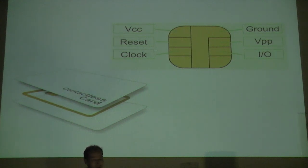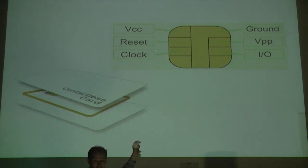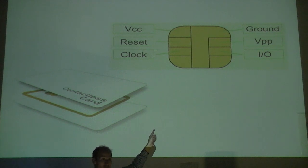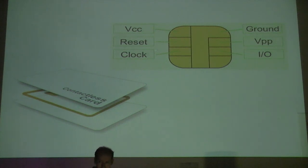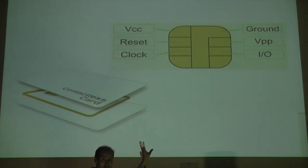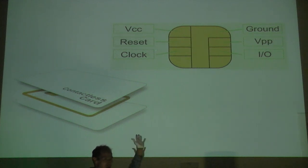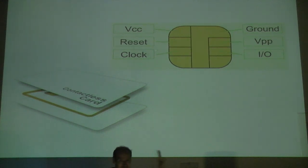If you have a contact smart card, there are different contact points: one for power (VPP, VCC). In the old days, you needed VPP to program the card — a higher current. There's also a clock signal; the computer within the smart card is so simple it doesn't have its own crystal, so the clock signal is external. Every input or output channel on a smart card is a potential attack vector, so modern smart cards have their own internal clock. They accept the external clock signal for backward compatibility, but of course they don't trust it.